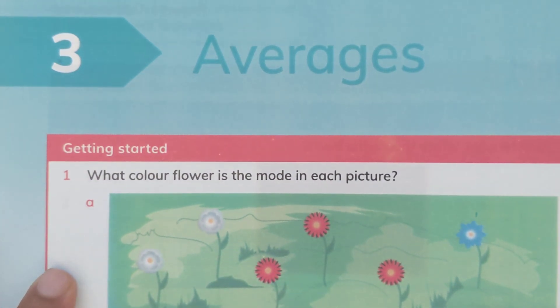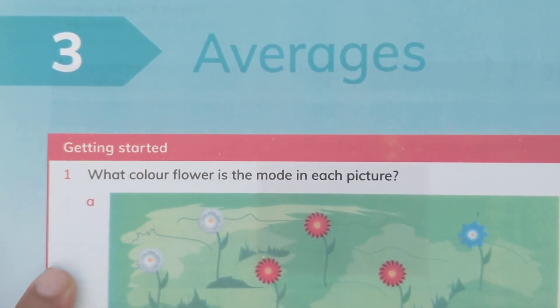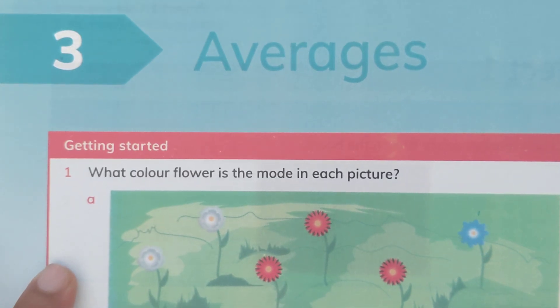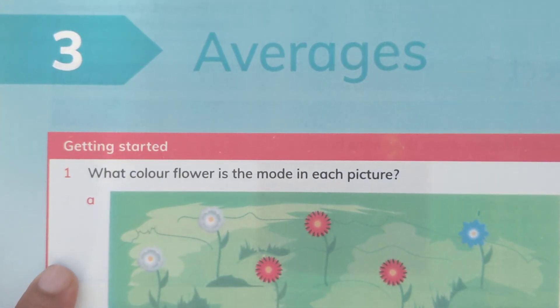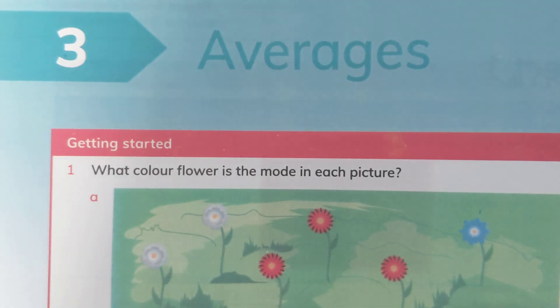Bismillahirrahmanirrahim. Assalamu alaikum, dear students, how are you? I hope you'll be fine. This is Cambridge Primary Mathematics Learner's Book 6, and today we are going to start with chapter number 3: averages.